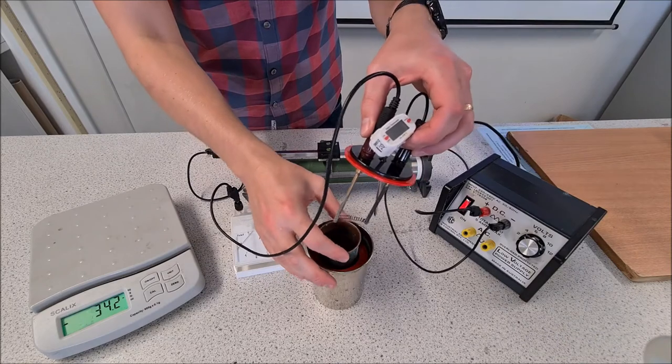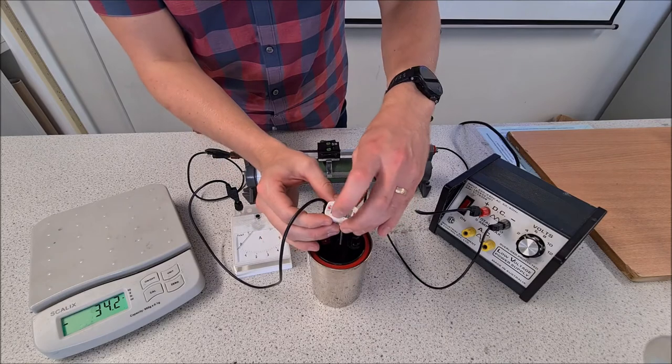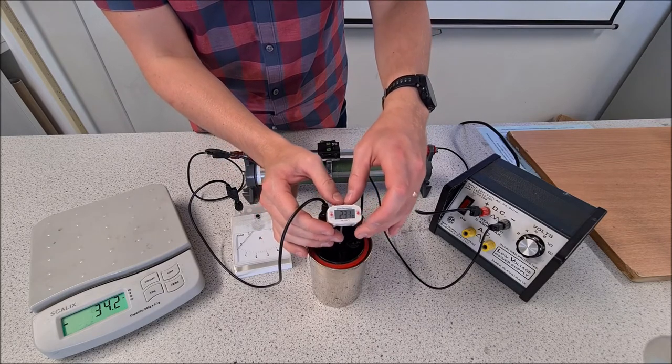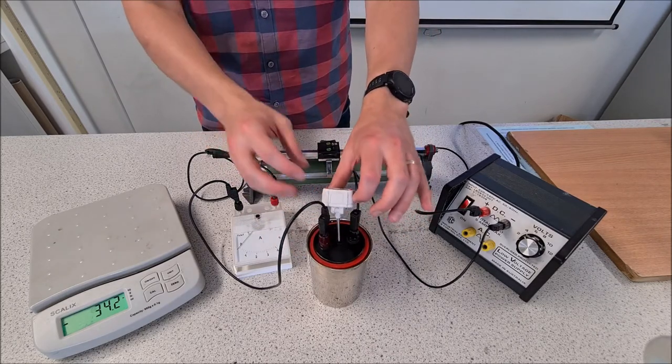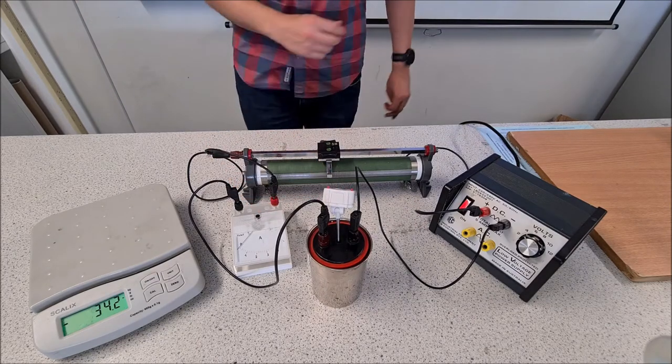So we'll pop that into the calorimeter, put that back on, and we're just going to give it 30 seconds to stabilize the temperature. Okay, so that seems to be steady, so that's your theta one is 22.8.